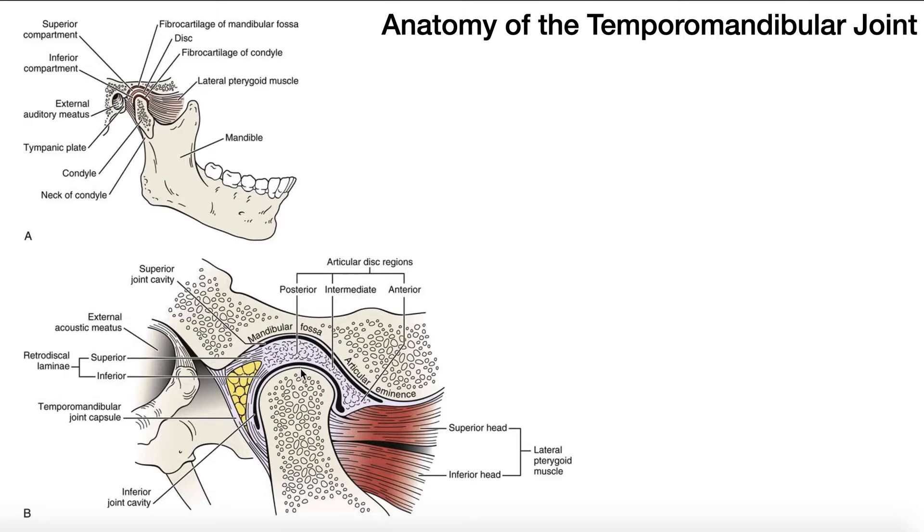Now, for the TMJ, here's the mandibular condyle. It articulates indirectly, keyword indirectly, with the mandibular fossa. Now, the mandibular fossa is a concavity within the temporal bone.